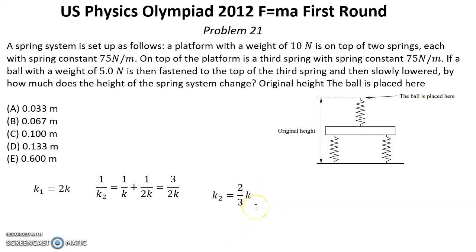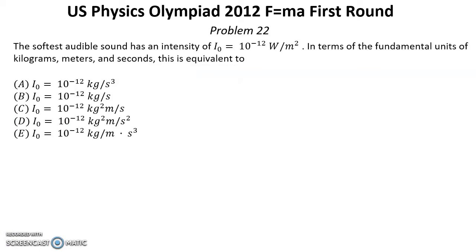The last step is to find the displacement. That will be force 5 N divided by equivalent k for the whole system. The answer is 0.1 meters or 10 centimeters. Answer is 0.1 meter which is C, correct answer.